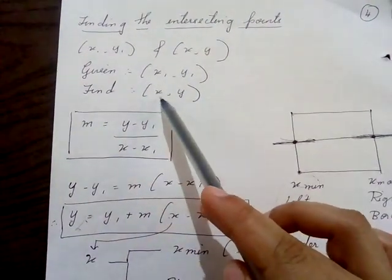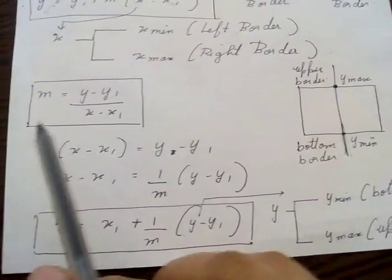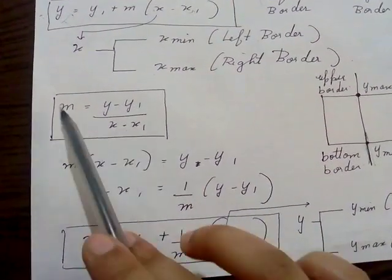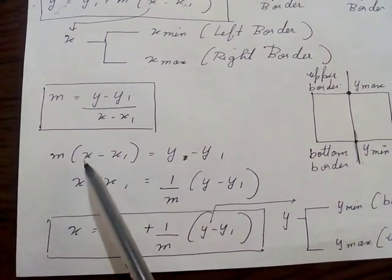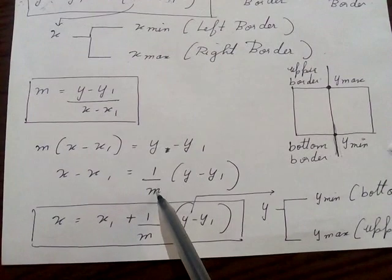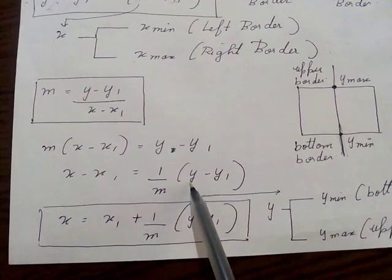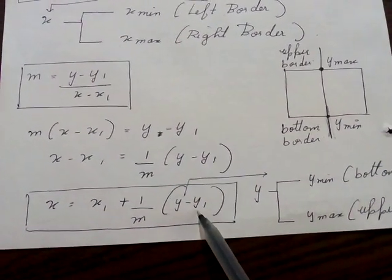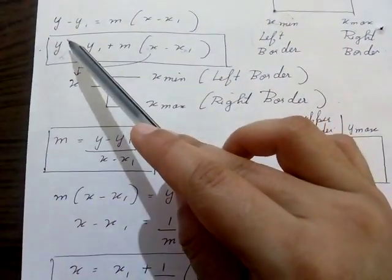Now we need a formula to find the x-coordinate of the intersection point. Starting again from m = (y - y1) / (x - x1), rearranging gives x - x1 = (y - y1) / m, so x = x1 + (1/m)(y - y1). This is the formula for finding the x-coordinate of the intersection point.